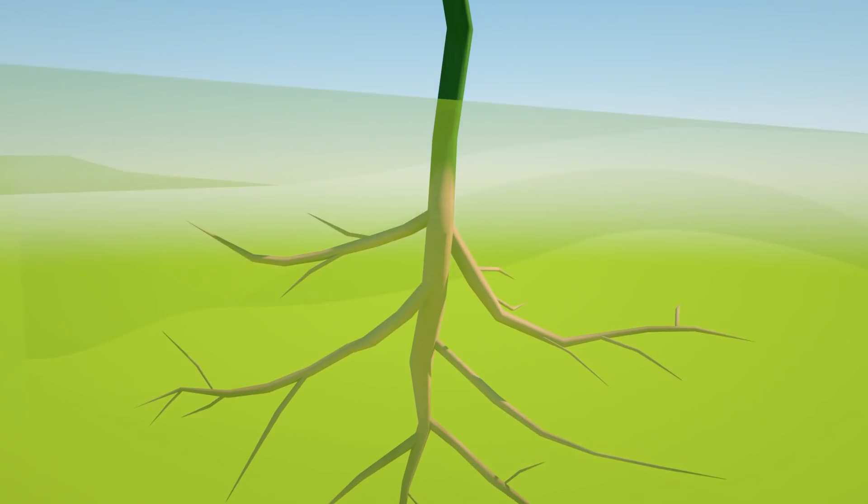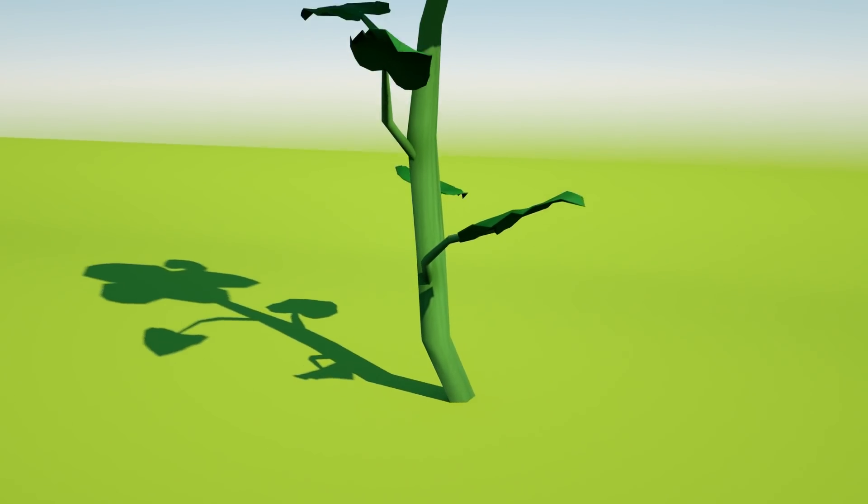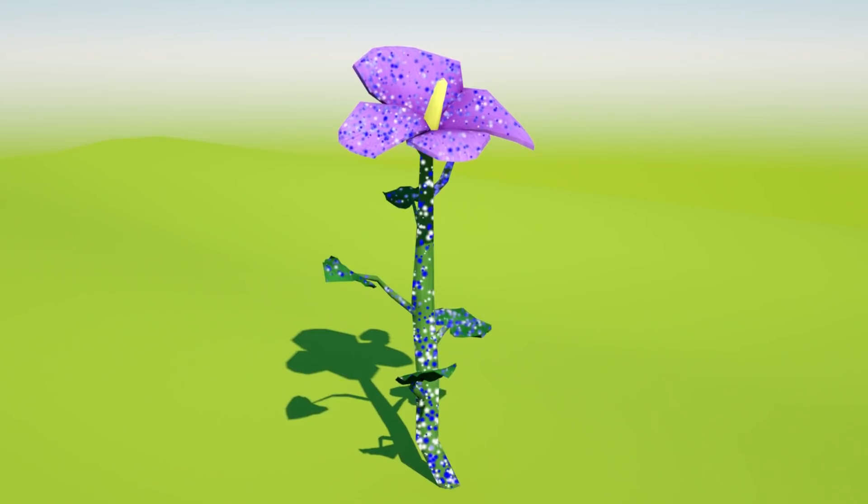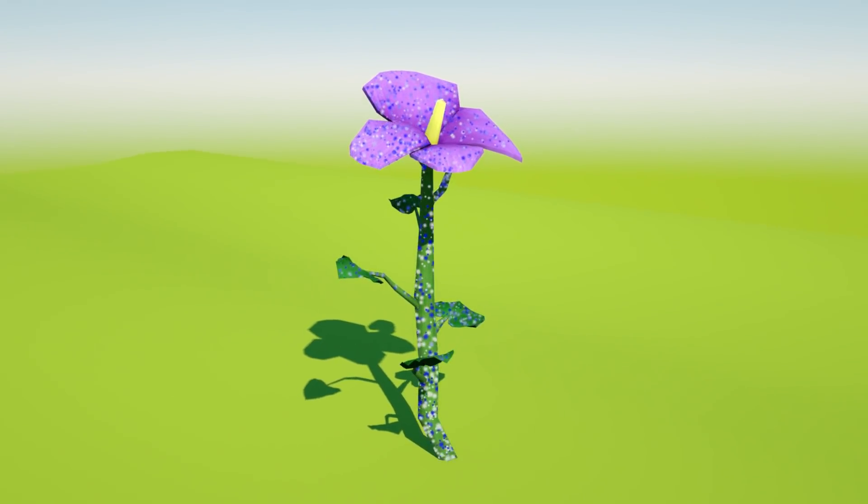The stem. The stem holds up the plant. It also brings water and food straight from the roots to the rest of the plant. Green stems carry the nutrients during photosynthesis.